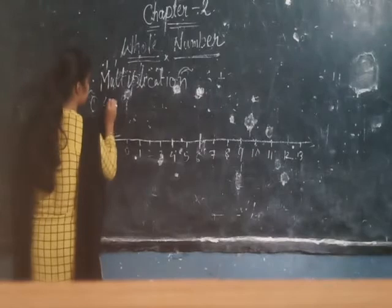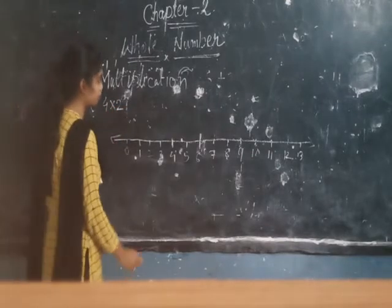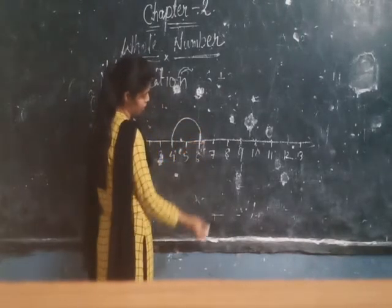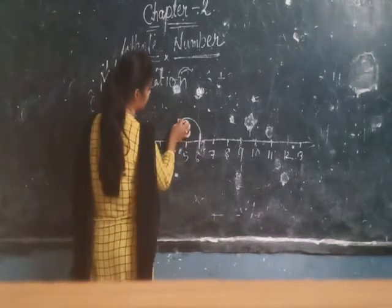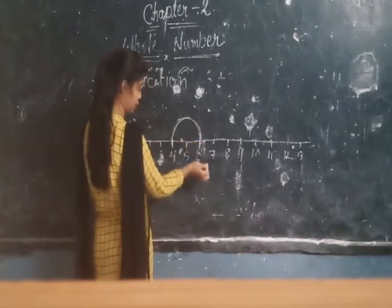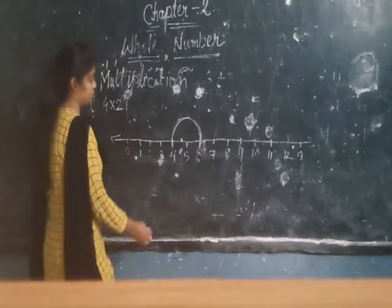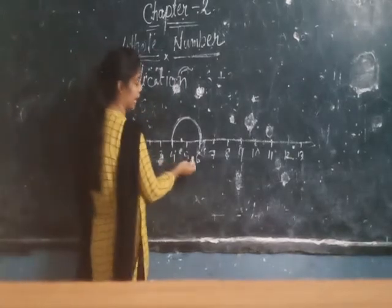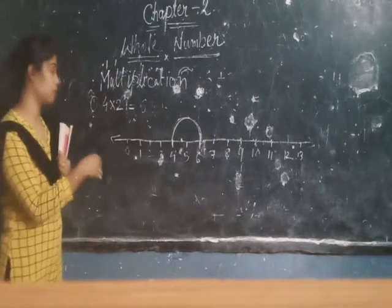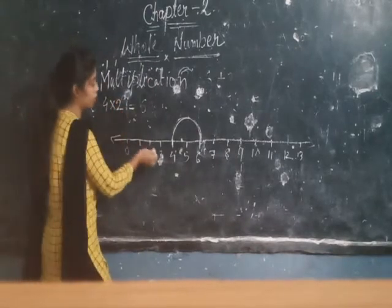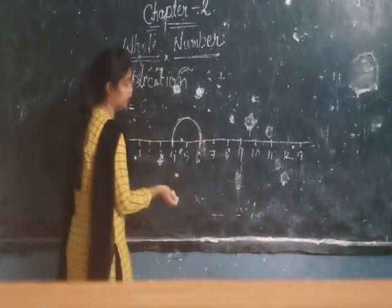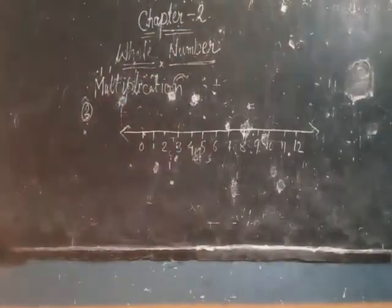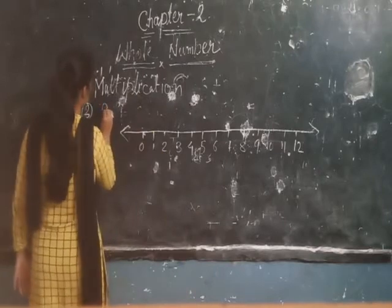Four into two. So, we have four times. We have four times we jump two times. Four times we jump two times. We have to jump three into two.